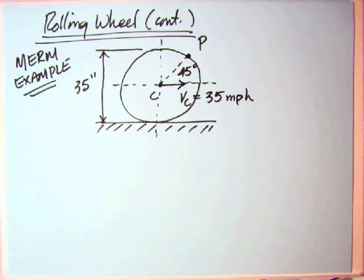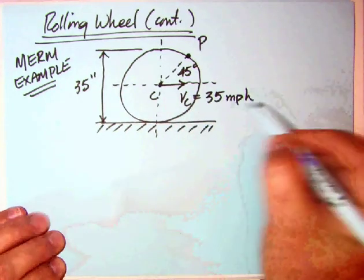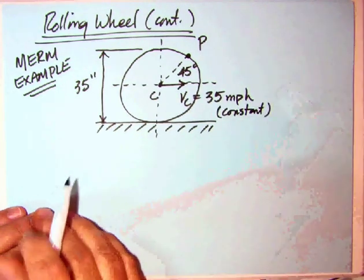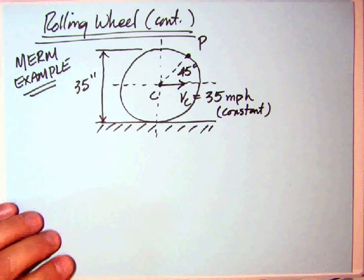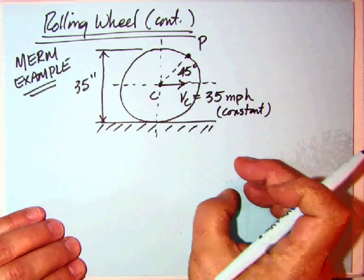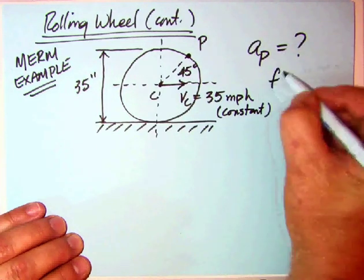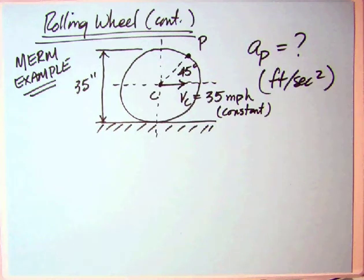The problem that was in the MERM was really just on velocity. Let's suppose we have the same problem with the velocity of the center of the wheel moving at 35 miles per hour, and let's assume that is a constant. The wheel was given as 35 inches in diameter. Whereas we were asked for the velocity of P before, let's find out what the acceleration of P is, both magnitude and direction, in feet per second squared.